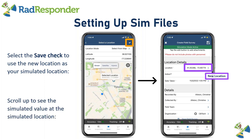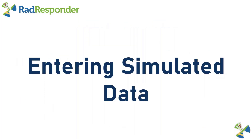Now scroll up and you'll see what your simulated value is going to be at that simulated location. With your equipment entered, height selected, window open or closed, and location set, you're now going to be receiving your actual simulated value.